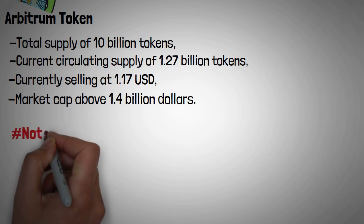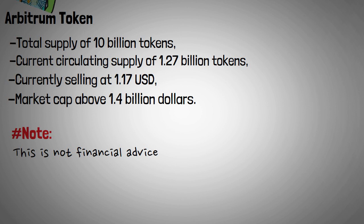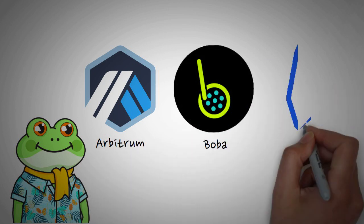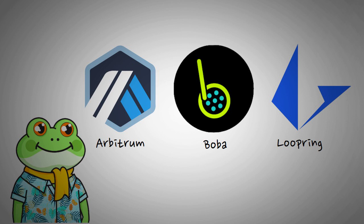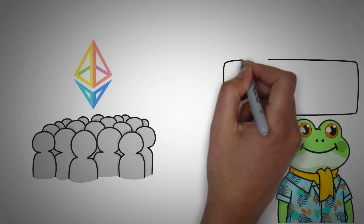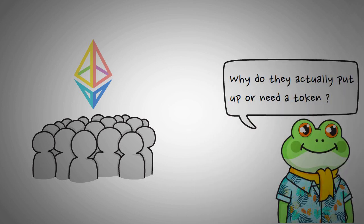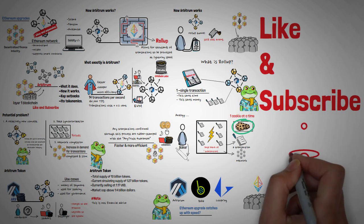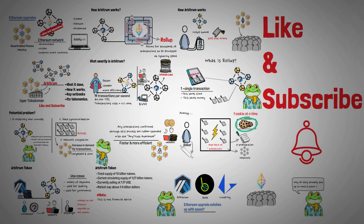Kindly note that this is not financial advice, but for educational purposes only. Arbitrum, just like every other rollup network like Boba and Loopring, is surely doing us great service. But what happens when the Ethereum upgrade catches up in speed? Arbitrum's main task is to make things easier for Ethereum users, so I keep asking why they actually put up or even launched a token. I'm not concluding yet — they will have their reasons. Please let me know what you think about this open-ended question and Arbitrum as a whole in the comments below. Like this video if you enjoyed it, subscribe to our channel, and don't forget to turn on notifications. Thank you for watching — I'll see you in the next episode.